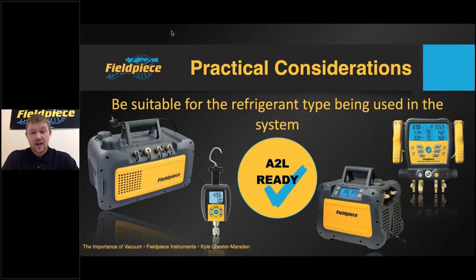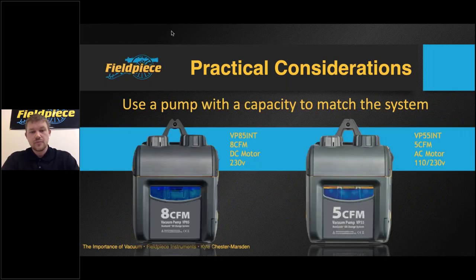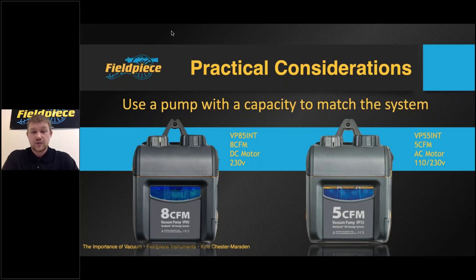A2L refrigerants are mildly flammable, and that is what we're discussing when we talk about these ratings — ensuring there are no obvious ignition points within the equipment. Next: ensure you use a vacuum pump chosen and rated in relation to the system size. Whilst there are hundreds of different vacuum pumps available, the engineer must ensure the pump matches the system capacity. As a rough guide, to estimate the CFM value — cubic feet per minute — take the tonnage of the system and take the square root of that number. This gives an approximate CFM value required. Typically this is around four to five CFM for domestic and light commercial systems.